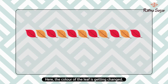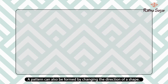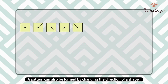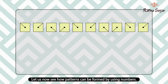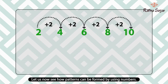Let us now form a pattern by changing the color of a shape. Here, the color of the leaf is getting changed. A pattern can also be formed by changing the direction of a shape — the direction of the line in the square is changing in this pattern.